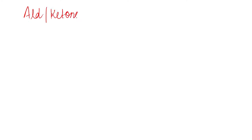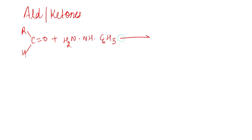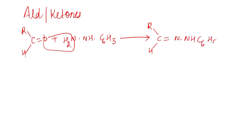First of all, yahan pe given hai ki yeh form karega phenyl hydrazone — phenyl hydrazone is formed by aldehydes or ketones on reaction with phenyl hydrazine. For example, agar yeh aldehyde hai aur iski reaction hum karvate hai with phenyl hydrazine, toh yahan pe water will be eliminated, seedha jaake yahan pe N attach ho jayega — this is known as phenyl hydrazone.